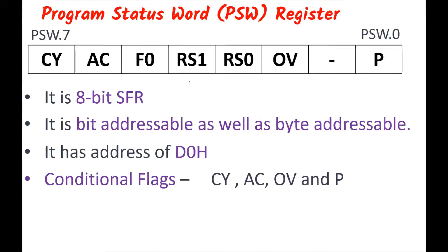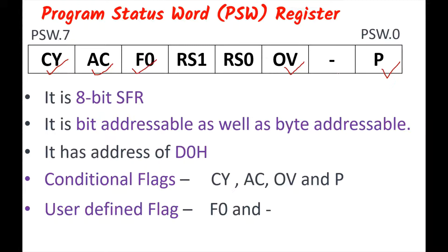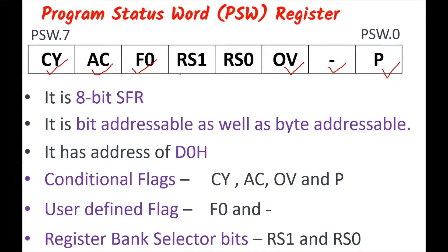Out of the 8 bits of PSW, four bits are conditional flags: carry flag, auxiliary carry flag, overflow flag, and parity flag. While F0 and the dash bit are two user-defined flags — the user can set them, reset them, or check their state. The last two bits are RS1 and RS0, which are meant for selecting the register banks of the 8051 microcontroller.